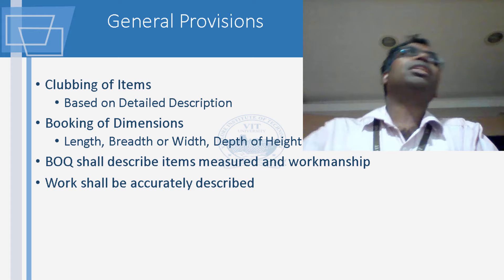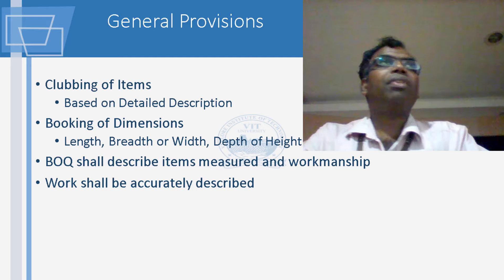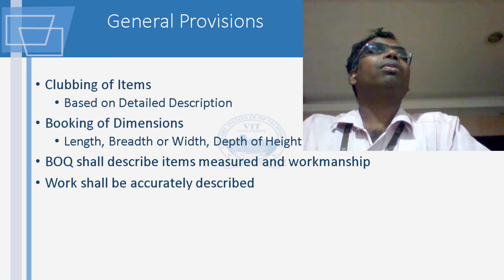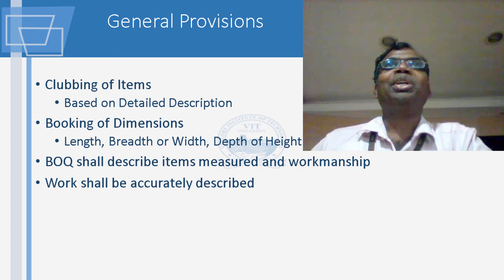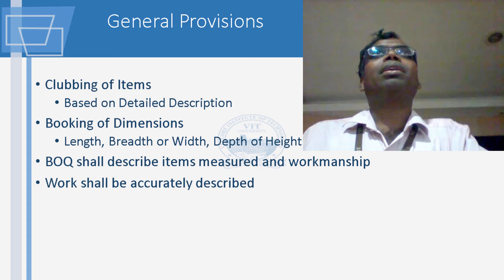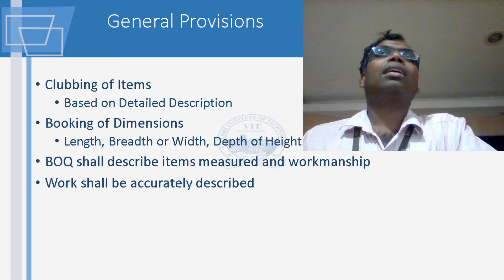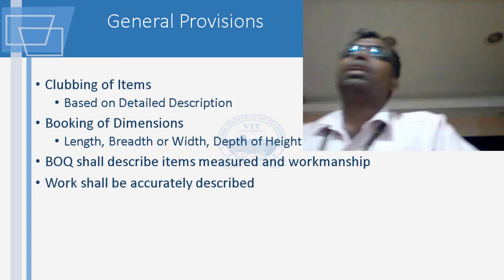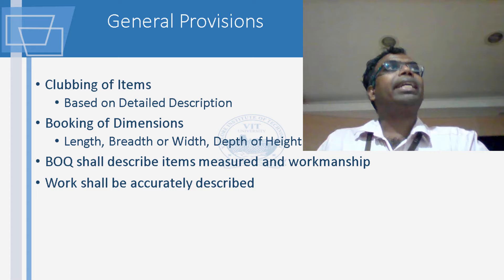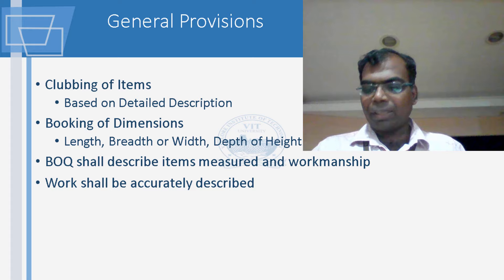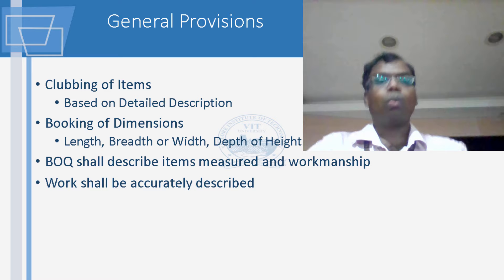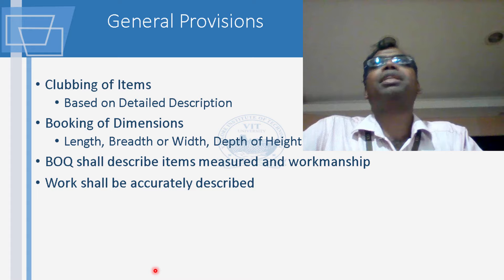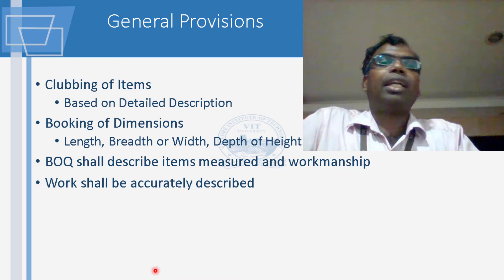These are the general provisions when looking at measurements. First and foremost, you club items of similar nature. When you have a measurement done, you give a bill of materials grouping similar works. For example: excavation is one group, PCC work under footing is another, then RCC work, and so on. RCC will be one major chapter, painting will be one major chapter. The dimensions are then booked — entering dimensions into your measurement book is called booking of dimensions. The order used is length, breadth, and height.